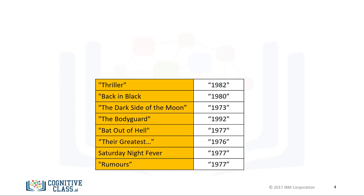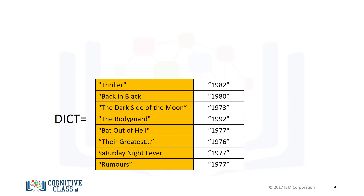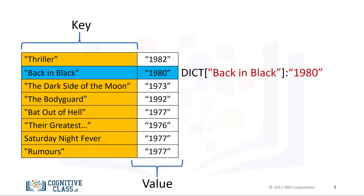We can add a few more examples to the dictionary. We can also assign the dictionary to a variable. The key is used to look up the value — we use square brackets, and the argument is the key; this outputs the value. Using the key 'Back in Black', this returns the value of 1980.